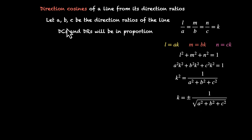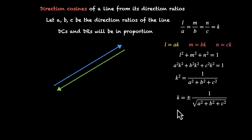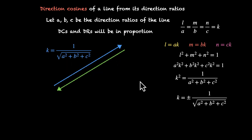So if we know A, B and C — the direction ratios — we can figure out this constant, and we can take either the plus or minus value to get our direction cosines. Which value to pick depends on the context, on which direction we are headed. If we're headed in the same direction as the point with coordinates A, B and C, we take the positive value. If we're heading in the opposite direction, we take the negative value. Both give the same line — the difference is the direction we're headed.